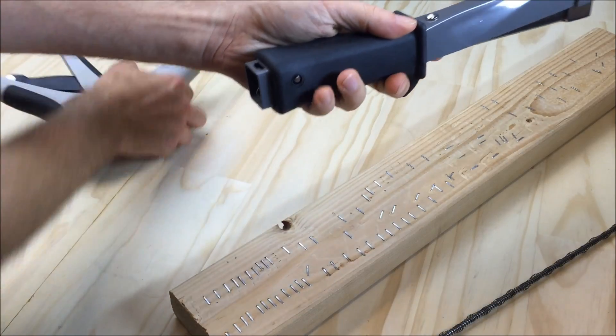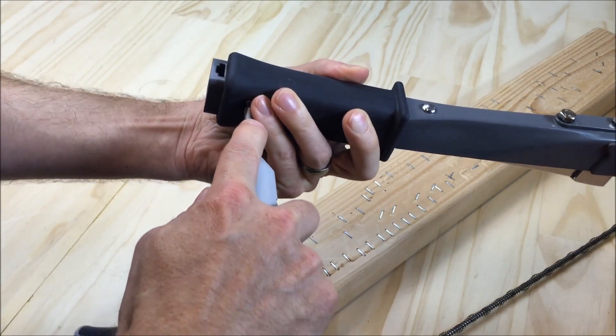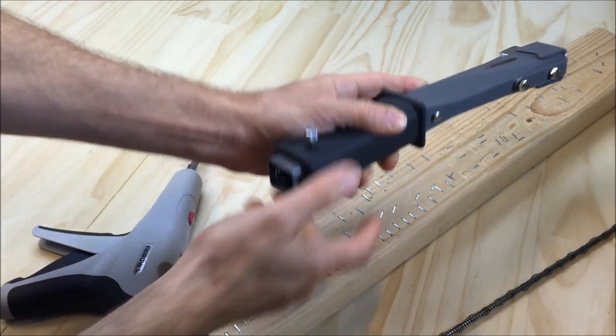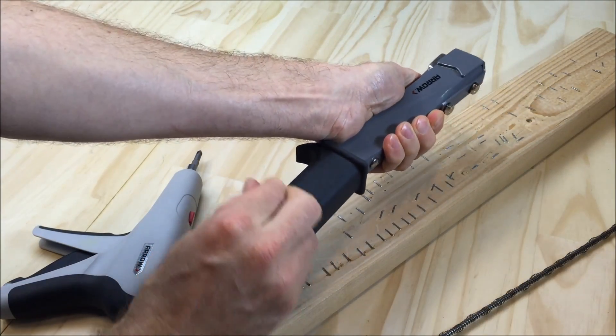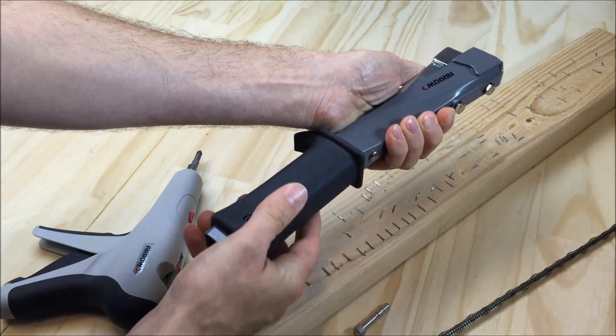Then, use any tool to push the pin part way out. Press up on the magazine and remove the pin the rest of the way.